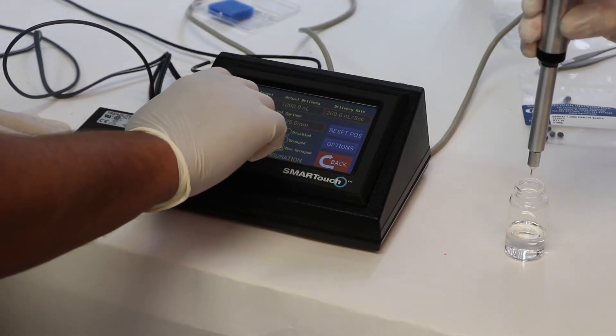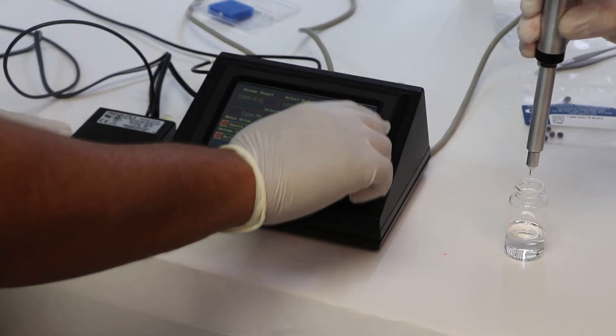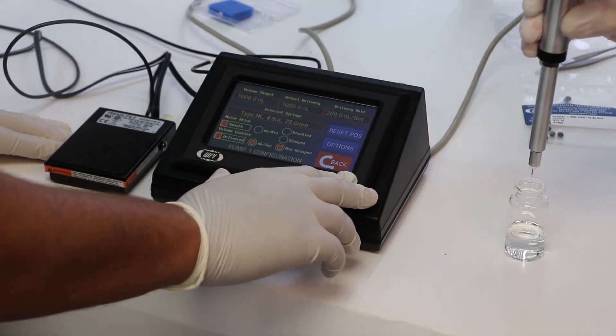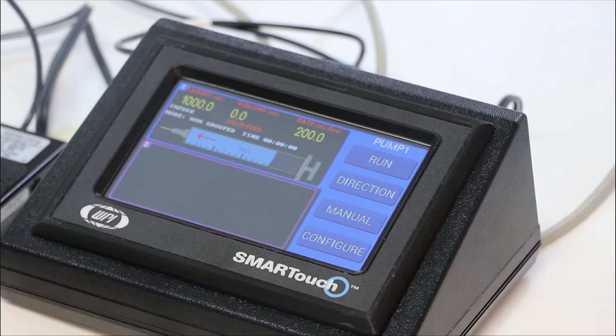We go to the first screen and we're going to set a thousand nanometer dispense at a rate of 200 nanometers per second.